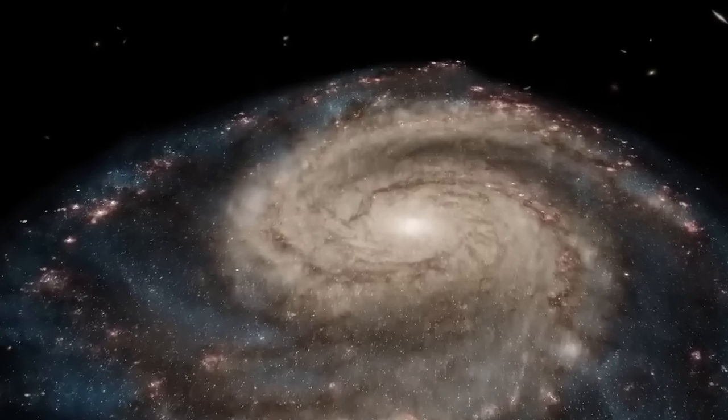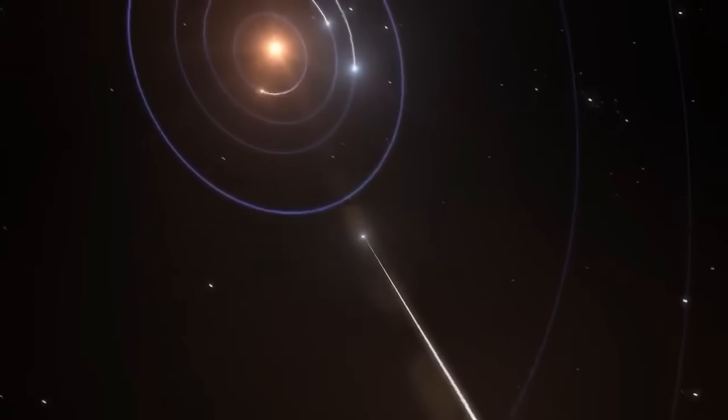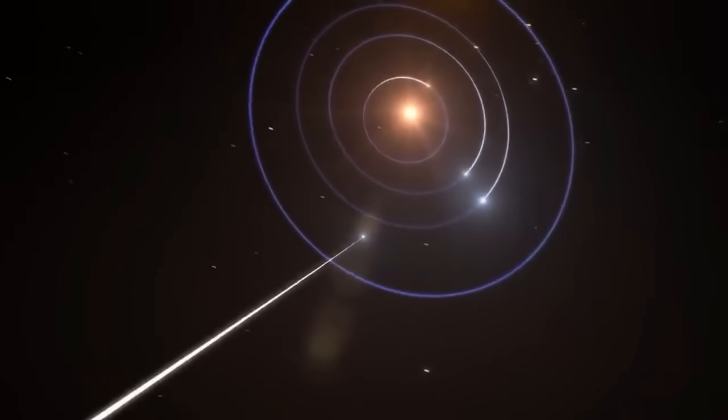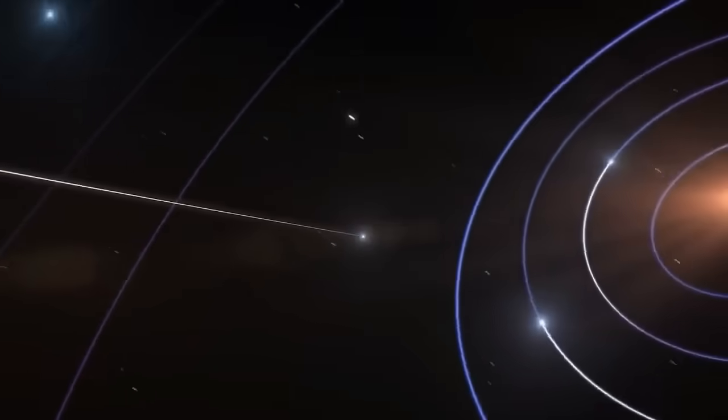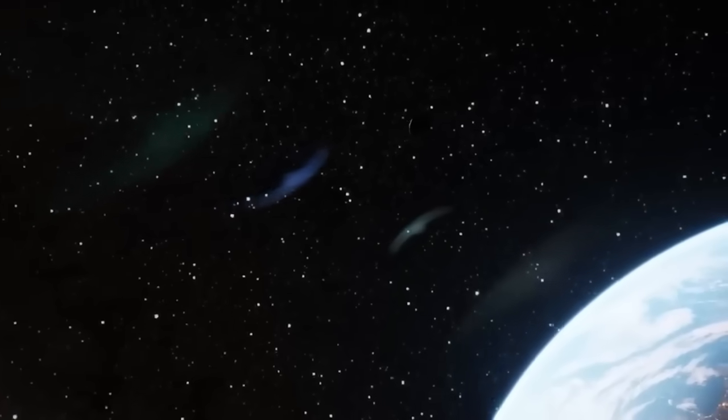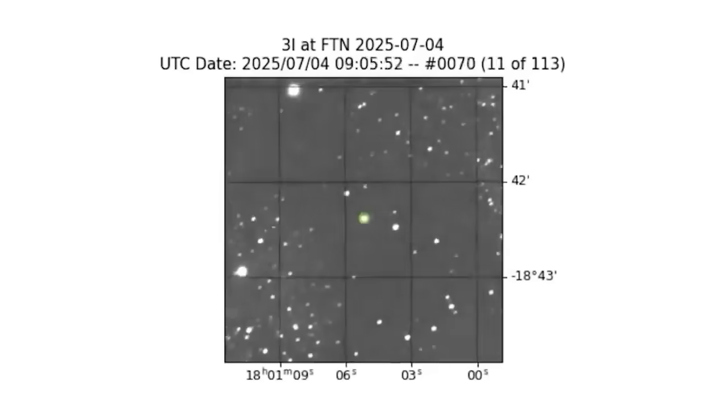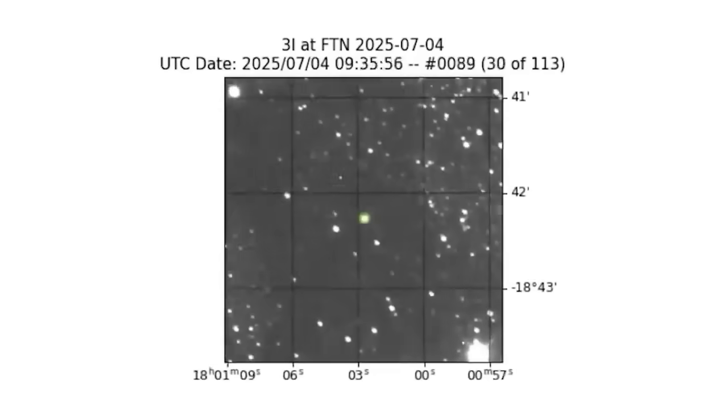Consider the vastness of space. Objects traveling from other star systems could be composed of materials completely alien to our understanding. What if these objects are covered in a substance that absorbs 99.9% of all electromagnetic radiation, rendering them virtually invisible? Even a small change in reflectivity can make an object disappear against the black backdrop of space.